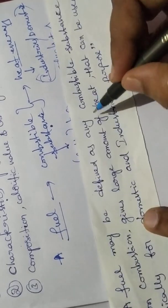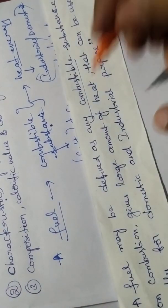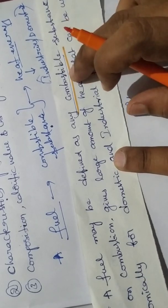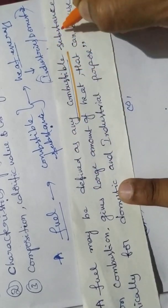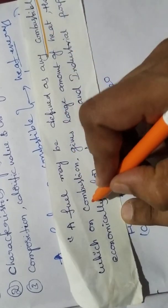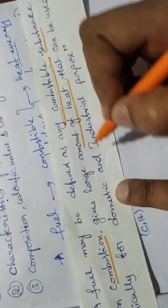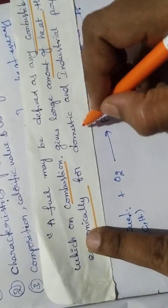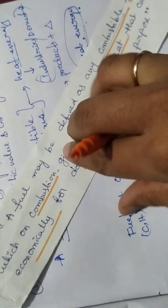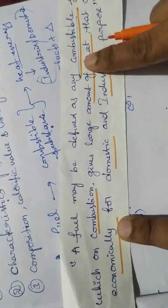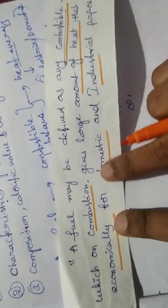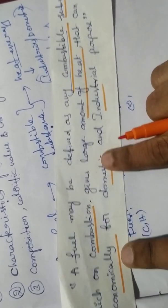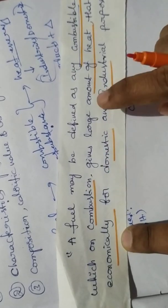Fuel may be defined as any combustible substance — combustible means burning. These are the key words in the definition. Fuel may be defined as a combustible substance which, on combustion — combustion means burning — gives a large amount of heat that can be used economically for domestic and industrial purposes.